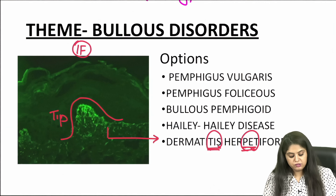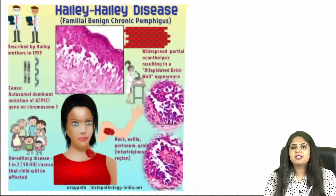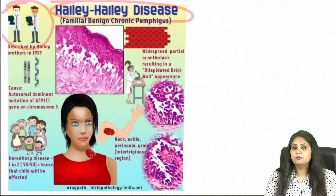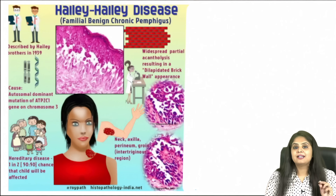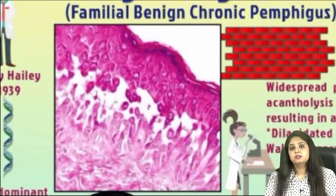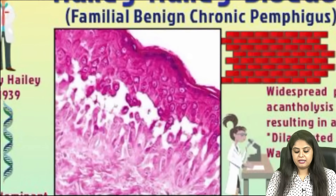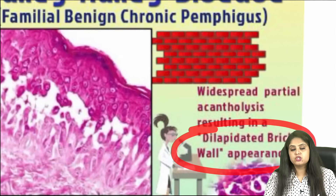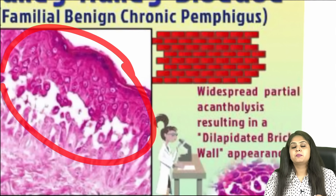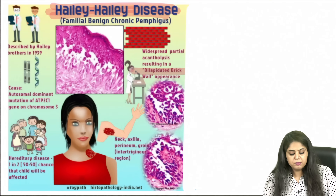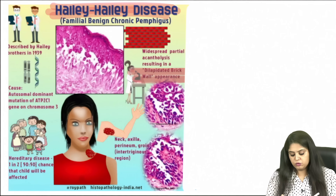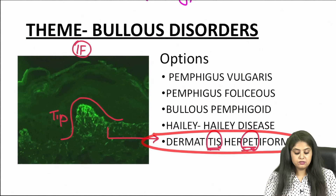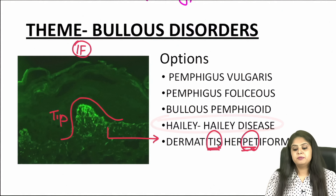For NEET-PG students: Hailey-Hailey disease, discovered by the Hailey-Hailey brothers, is seen in body folds like the neck, axilla, and groin. The histopathology shows the entire epidermis looking like a broken, dilapidated wall — that is the dilapidated brick wall appearance. To summarize bullous disorders: pemphigus shows fishnet pattern, bullous pemphigoid shows linear/ribbon candy pattern, dermatitis herpetiformis shows tip lesion, and Hailey-Hailey shows dilapidated brick wall appearance.